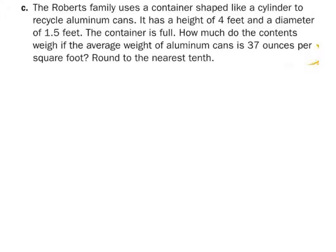The Roberts family uses a container shaped like a cylinder. Hey, that's a surprise because we're talking about cylinders. It has a height of 4 foot and a diameter of 1.5 foots. The container is full. How much does it weigh if the aluminum can is 37 ounces per square foot? All right, so we do need the volume in this one. Has someone figured the volume out for us by chance already? Figure out the volume, and then we'll talk about how to find the weight.